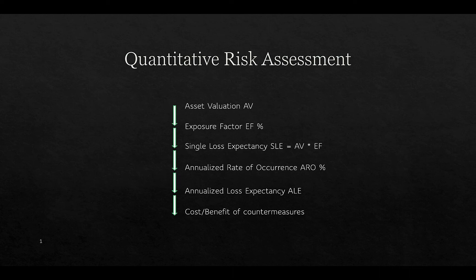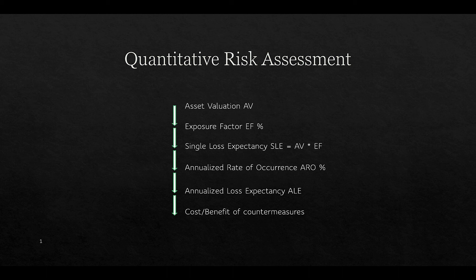In quantitative risk assessment we start with an asset valuation, then calculate an exposure factor — the percentage of that valuation that would be impacted by a threat exploiting a vulnerability. From that we work out the Single Loss Expectancy (SLE), which is the asset valuation multiplied by the exposure factor. We can then work out the cost-benefit of any countermeasures we might put in place, as covered in a previous video.